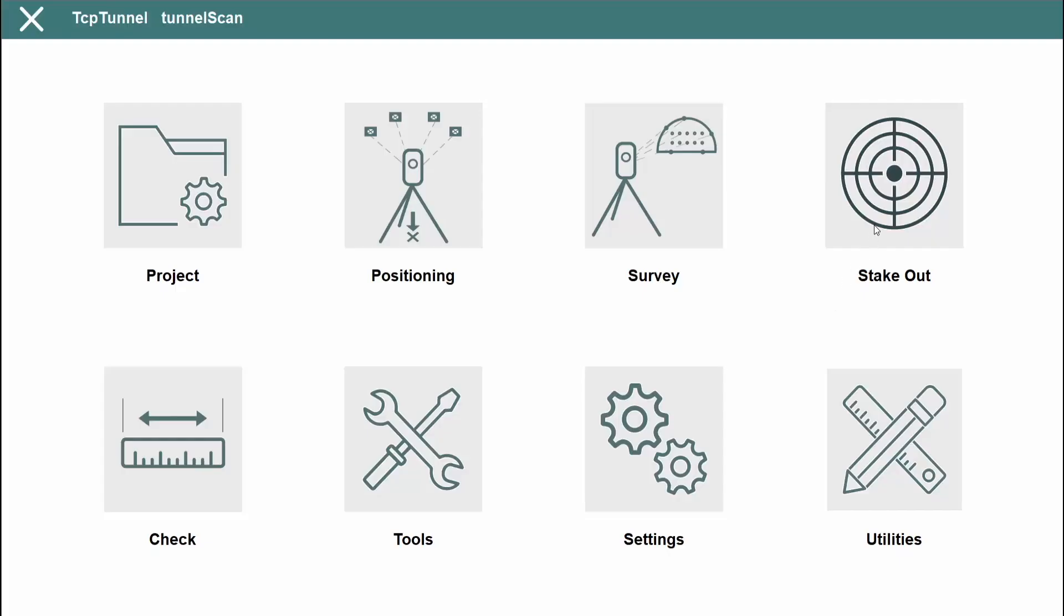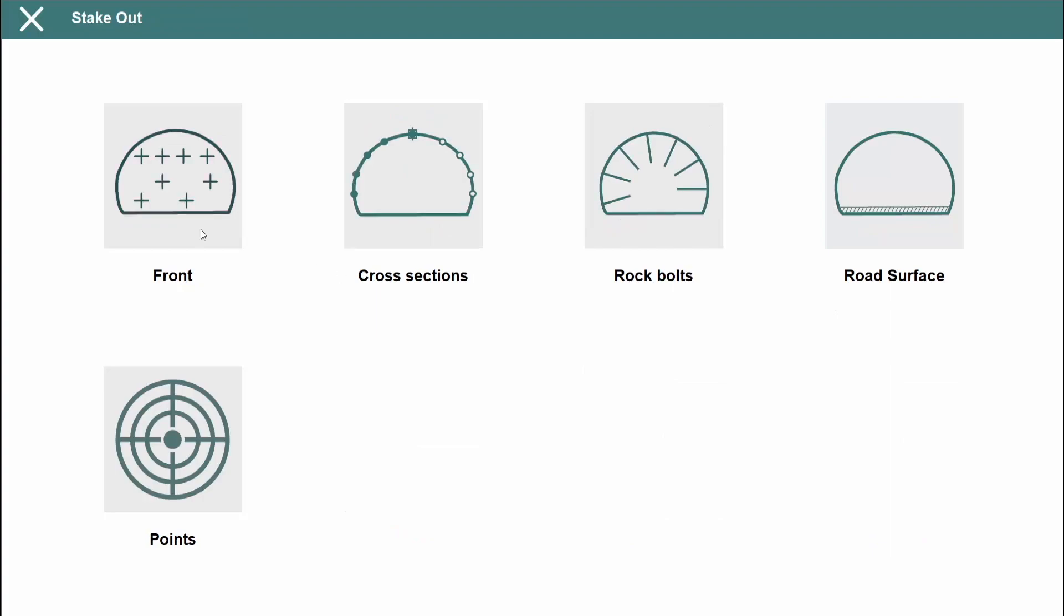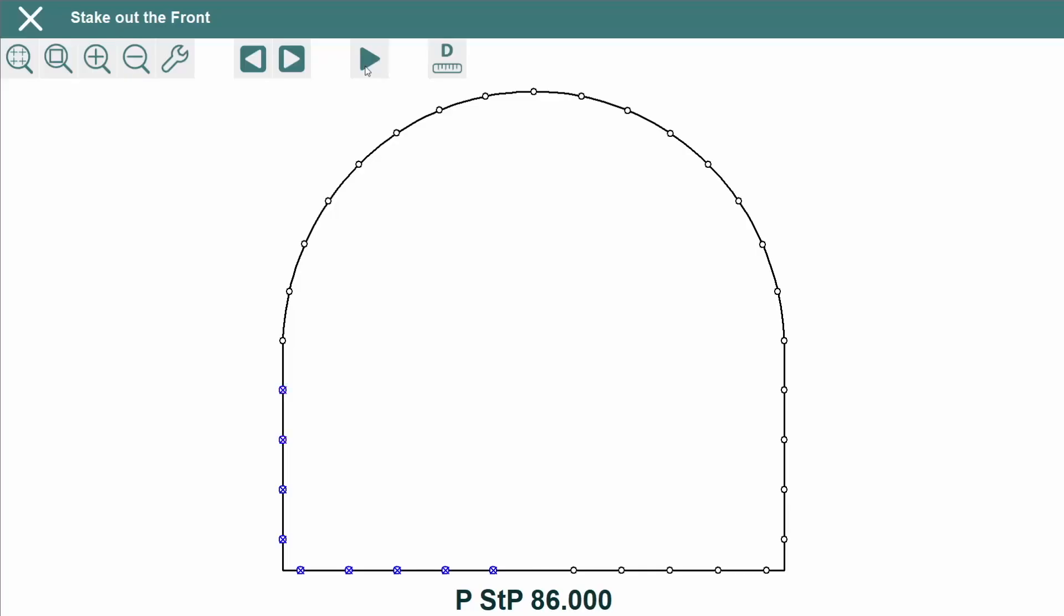TCP Tunnel Scan facilitates the stakeout of the tunnel front. For example, the drill hole points for the next blasting excavation sequence, points on the template, rock bolts, road surface and points of the project file.